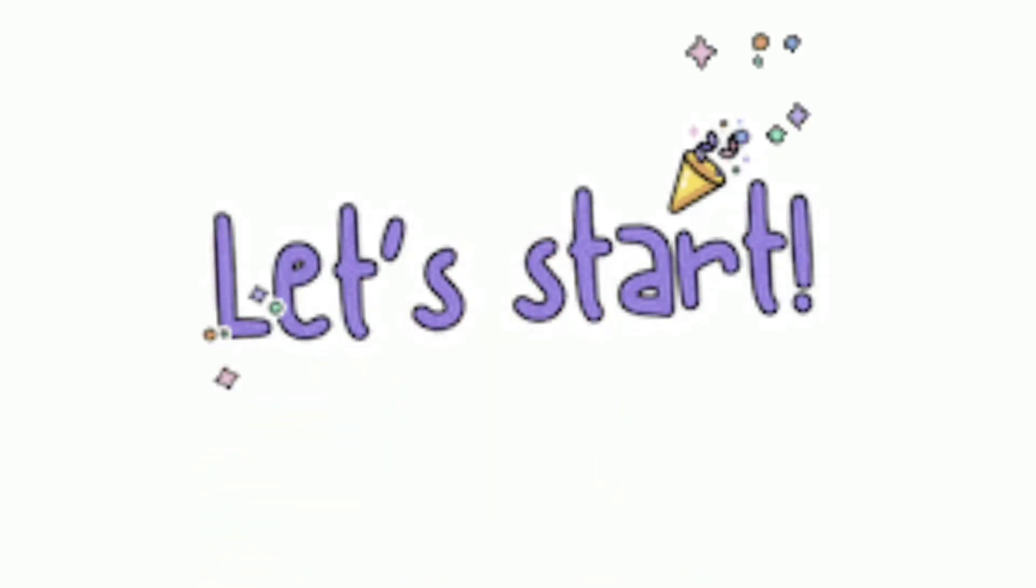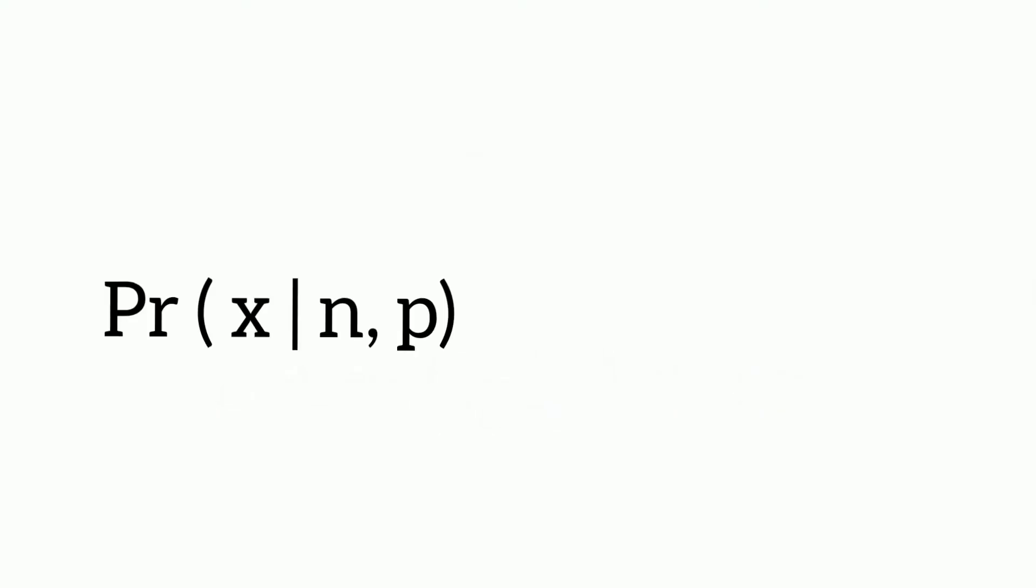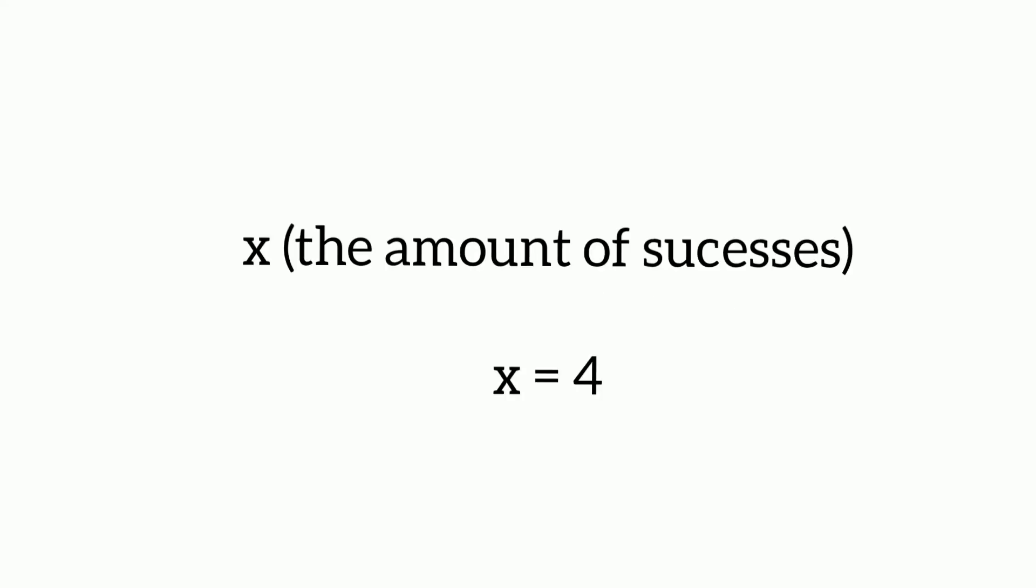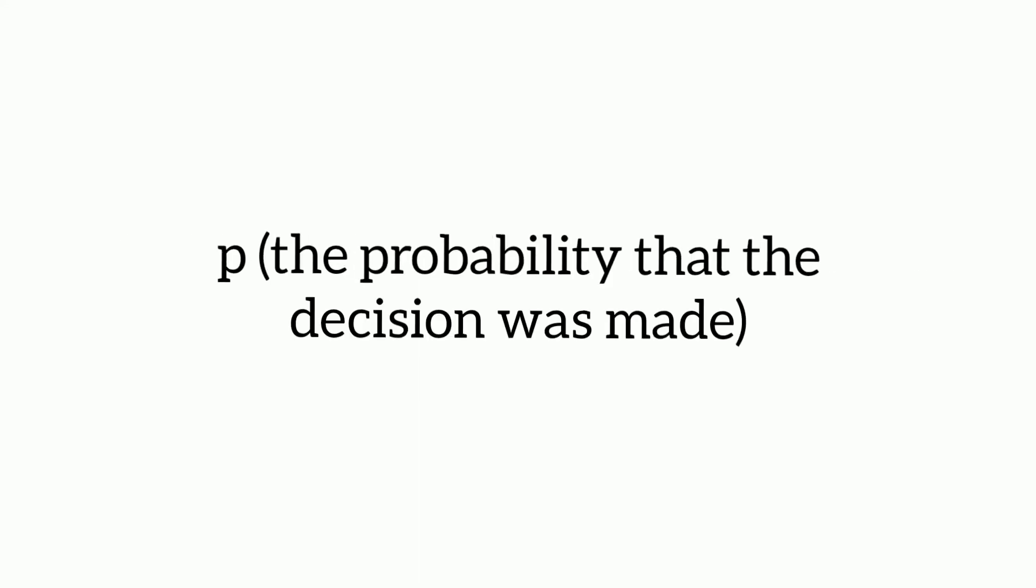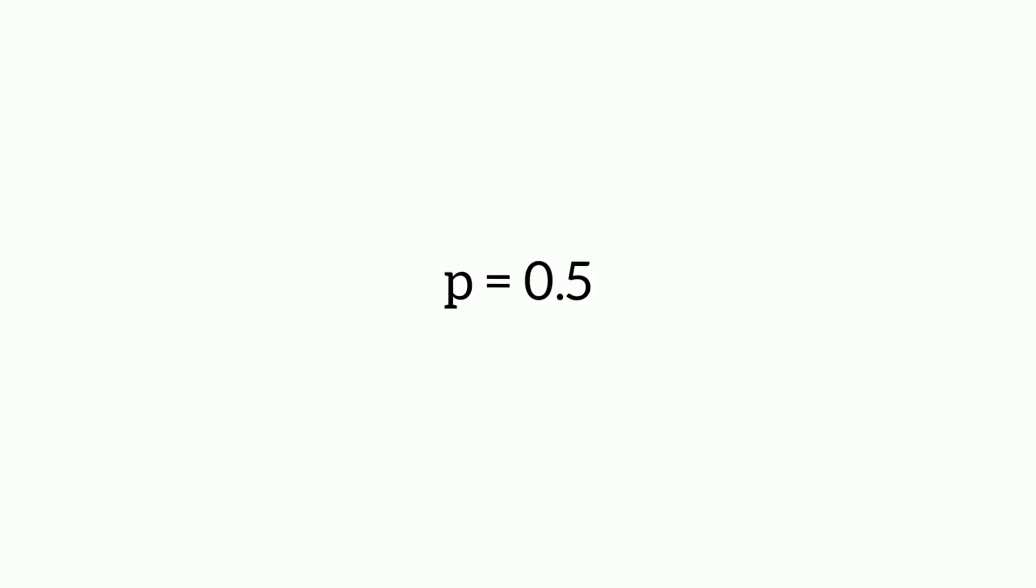Now that we understand the formula a little better, let's start the calculations. We'll be using this form of the formula to solve our problem. We put in our data in the first part of the formula: Pr for probability, x for the amount of successes, n for how many trials were performed, and p, the probability that a decision was made. In our case, the choice was either first to sixth or seventh to twelfth, which leaves it at a 50 percent chance that either one would be chosen. This is how the first part looks like.